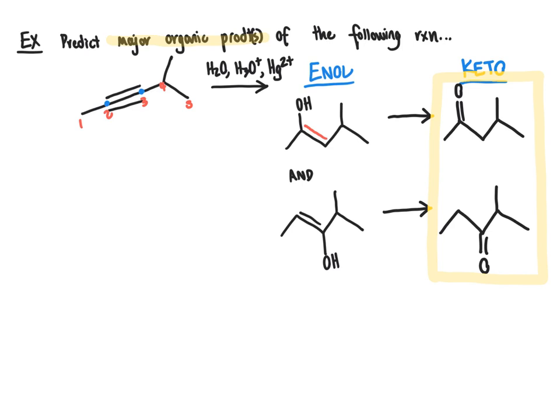These are going to be your two major organic products. Double-check that they are different constitutional isomers — the carbonyl group is at carbon number two in one case and at carbon number three in the other. These are definitely constitutional isomers with the carbonyl group at different positions of the chain.